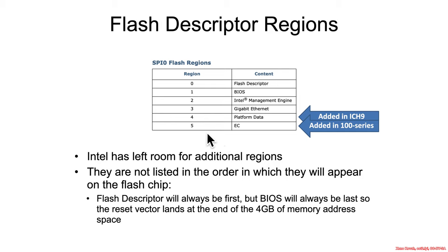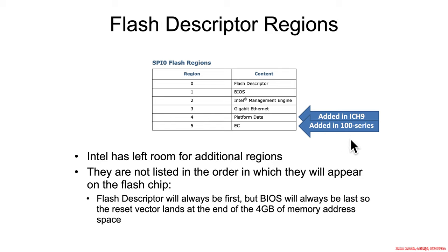There are also more bits available so that Intel can add more things in the future. For example, the platform data region didn't exist prior to the ICH 9, and the embedded controller region didn't exist prior to the 100 series chipset.